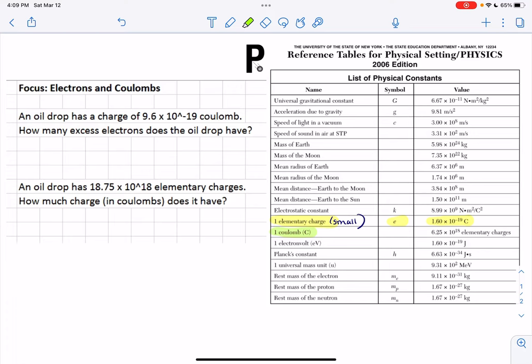So 1 coulomb, if you notice, is 6.25 times 10 to the 18 elementary charges. So this is a really, really big number of elementary charges that make up 1 coulomb. So 1 coulomb is often used for a lot of charges that are moving at once. So this is like a large quantity.